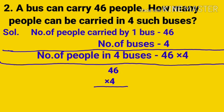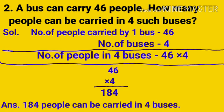So 46 × 4, we are writing separately and solving it. 46 × 4 gives 184: 6 × 4 = 24, write 4 carry 2; 4 × 4 = 16 + 2 = 18, so 184. The answer: 184 people can be carried in 4 buses.